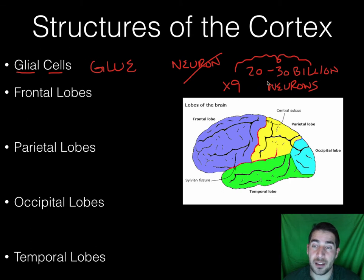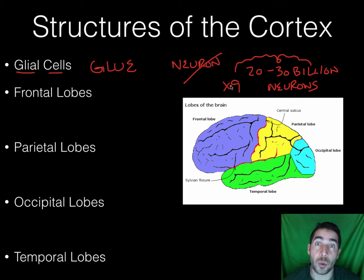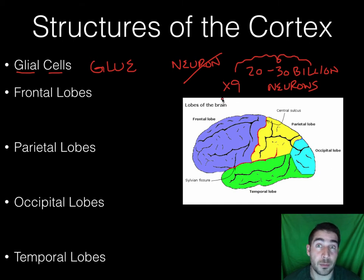You can look at it like neurons are the queen bee — they do the major work and are most important. Glial cells are the worker bees; they get a lot of the work done, and the queen bee wouldn't be able to do anything without them. So neurons are most important, but they wouldn't function without glial cells keeping everything together.